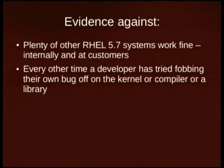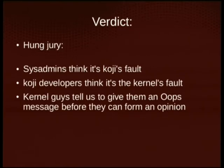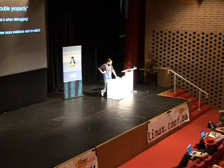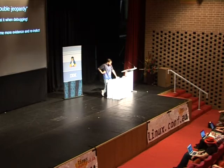Evidence for it being a kernel bug: all the memory had gone to something in slabinfo, so it's obviously the kernel allocating everything. And all these crashes only started when we upgraded to RHEL 5.7 — a Friday upgrade, started crashing on the following Tuesday, and continued every few days after that. Evidence against: all other RHEL 5.7 systems were working fine. The result was a hung jury — the sysadmins thought it was our fault, we thought it was the kernel's fault, and the kernel guys couldn't really comment because they didn't have enough data. But unlike with real juries, we can just try the case again.